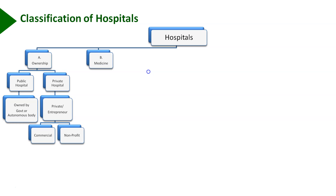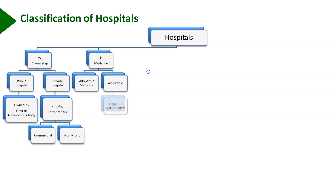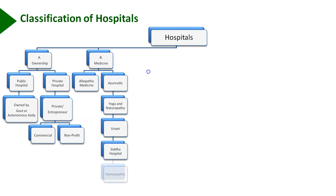Different types of classification include medicine classification, where hospitals are classified based on the type of medicine. If allopathic medicine is followed, that is the Western type of medication. Hospitals are also classified as per alternative systems of medicine — that is Ayush: Ayurvedic hospitals, yoga and naturopathy, Yunani, Siddha, and homeopathy.